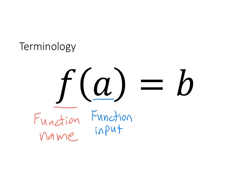And lastly, on the other side of the equal sign, we have b. b represents the output of the function.